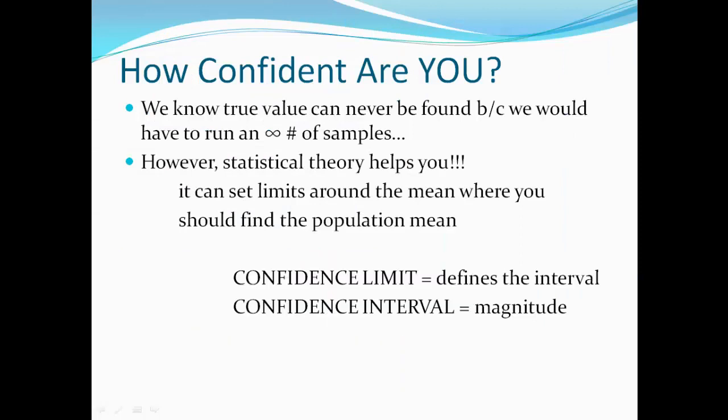I'm going to start this video by asking you how confident are you that the data you're going to produce in the lab is correct. We just talked about in the previous video how your true value can never be found because we would have to run an infinite number of samples. We've also learned that statistics can actually help you with getting closer to the actual mean, the true mean. Statistical theory could also help set limits around the mean or around the average where you should find the true mean, the population mean.